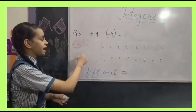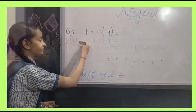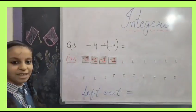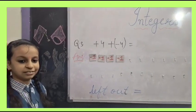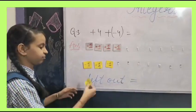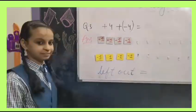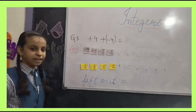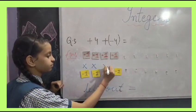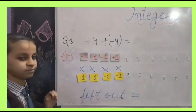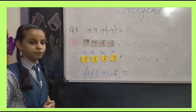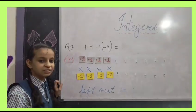It has plus 4. So we will paste 4 positive squares. We will paste 4 negative squares. Here we can see 4 squares will be cancelled out. Now we are left with no squares. So the answer will be 0.